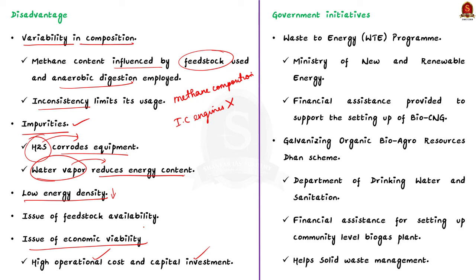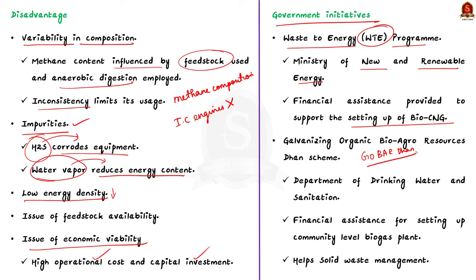Now let us look at the steps taken by government to promote biogas production and consumption. Firstly, the Waste to Energy Programme (WTE), implemented by the Ministry of New and Renewable Energy, provides financial assistance to support setting up of bio-CNG generation plants using waste from urban, industrial, and agricultural processes. Then there is the Gobardhan Scheme — Galvanizing Organic Bio-Agro Resources Dhan — implemented by the Department of Drinking Water and Sanitation. It provides financial assistance for community-level biogas plants, focused primarily on solid waste management.